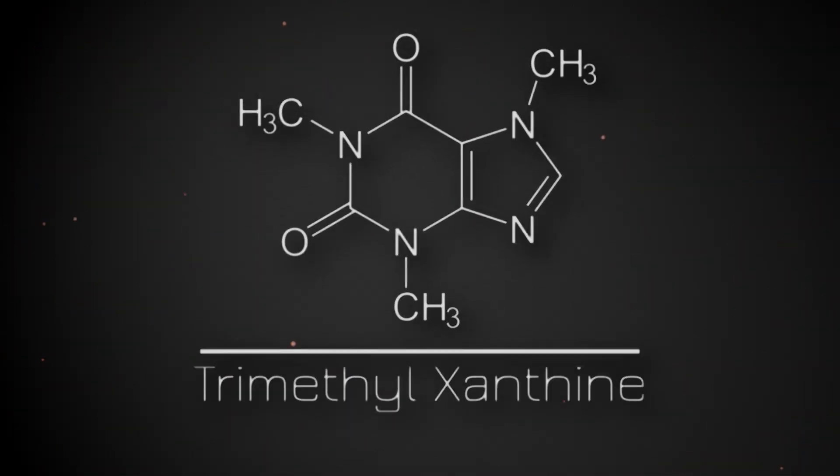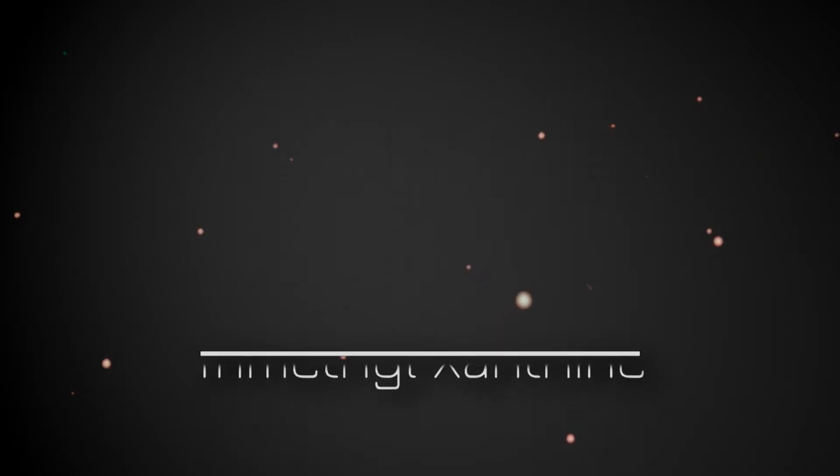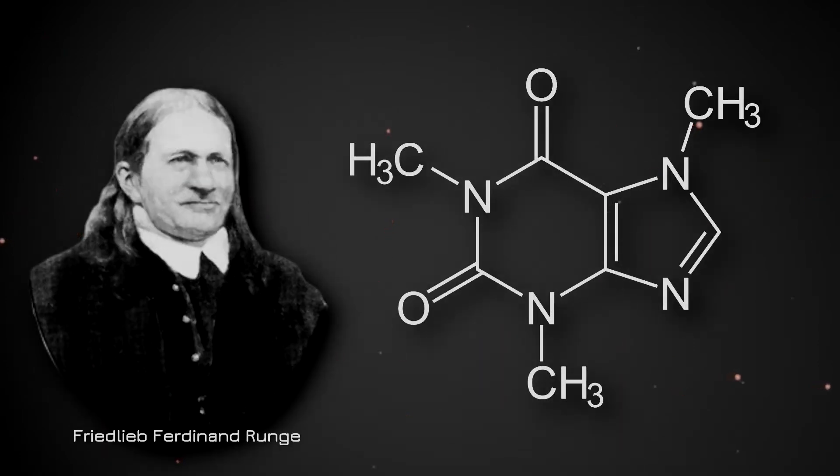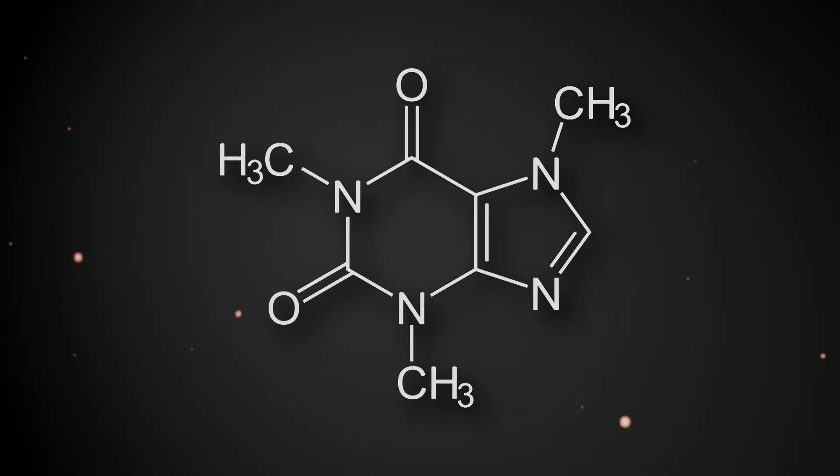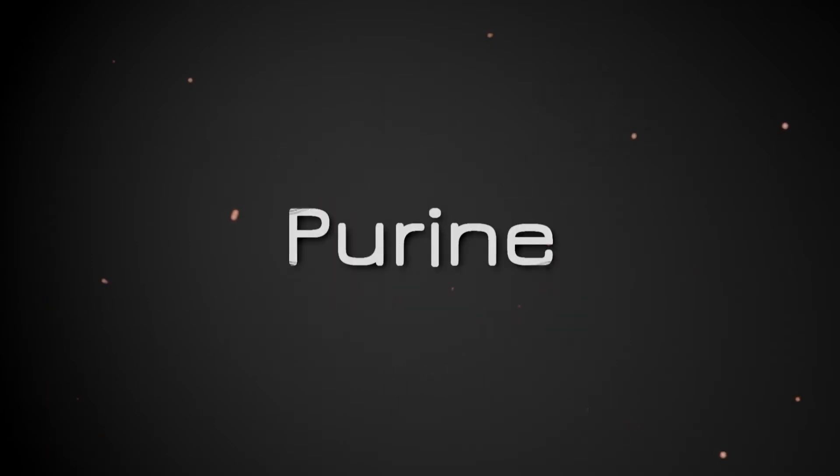Otherwise known as trimethylxanthine, caffeine was originally discovered in 1819 by German chemist Friedlieb Ferdinand Runge. It is the active ingredient in coffee and will be the focus of much of our episode today. Caffeine is an organic compound with a structure that is made up mostly of nitrogen bases arranged in an aromatic ring, a class of molecule that is most generally called a purine.